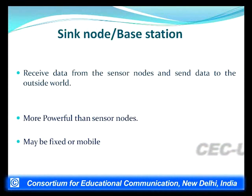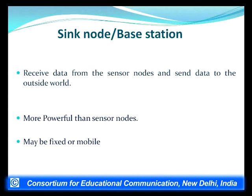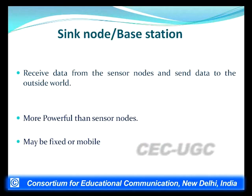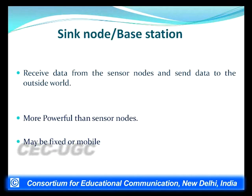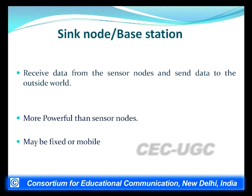The base station or sink node differs from sensor nodes. It receives data from all sensors, so it requires large storage capacity and must be linked to a gateway for internet connectivity. Its processing capacity must be large since it processes data from all sensor nodes. Base stations are generally fixed and not mobile, whereas sensor nodes are small, with limited processing, limited battery power, and limited storage.